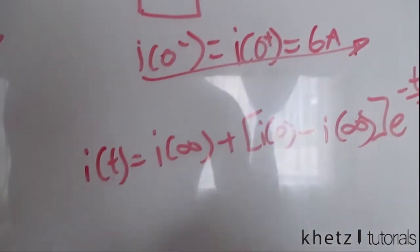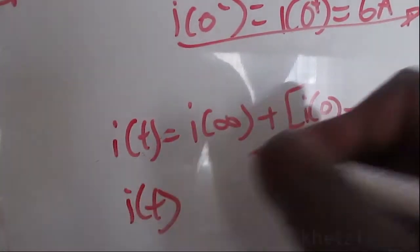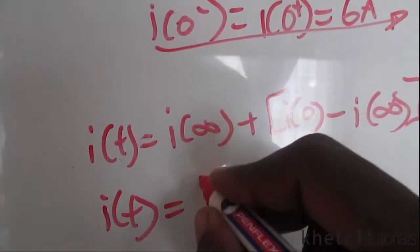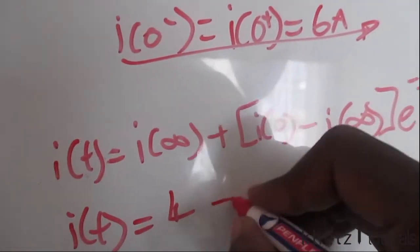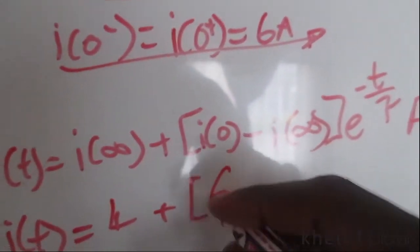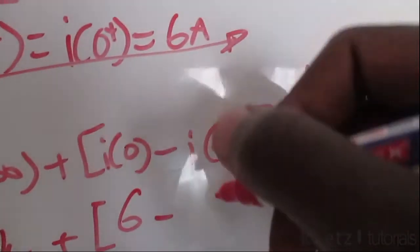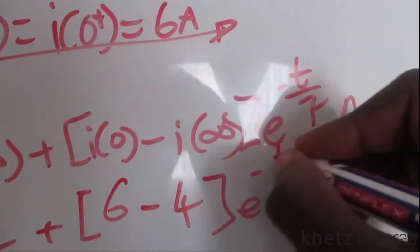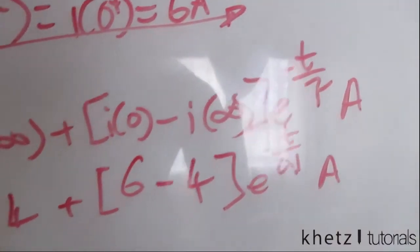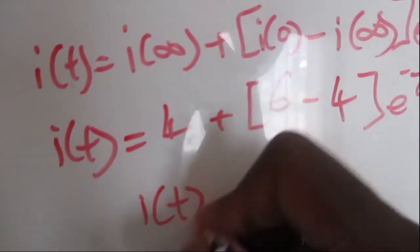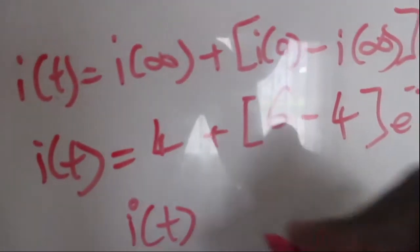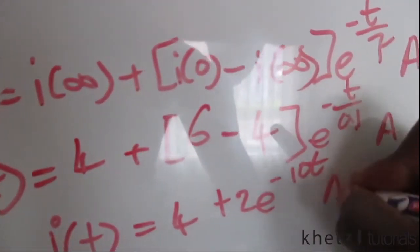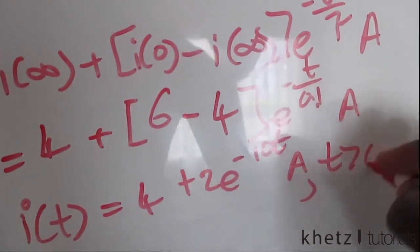We now have all the values which we need and we can substitute them into this formula. i(t) equals i(∞) which we found to be 4, and we have an initial current of 6, subtract the infinite current of 4, times e^(-t/0.1), which is our time constant. The final answer simplified is i(t) equals 4 plus 2e^(-10t) amperes for t greater than 0.